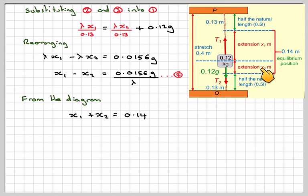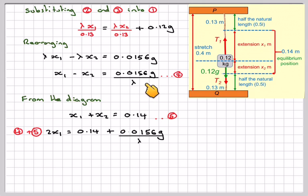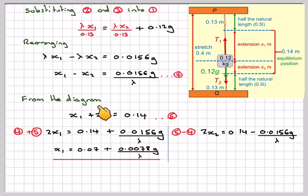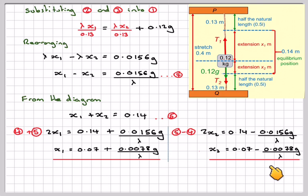From the diagram, x1 and x2 must add up to 0.14 metres — call that Equation 5. Adding Equations 4 and 5: 2x1 = 0.14 + 0.0156g / λ, so x1 = 0.07 + 0.0078g / λ. Subtracting Equation 4 from Equation 5: 2x2 = 0.14 − 0.0156g / λ, so x2 = 0.07 − 0.0078g / λ. Call that Equation 6.